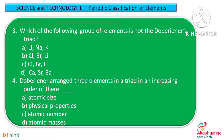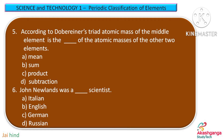Question 4. Dobereiner arranged three elements in a triad in an increasing order of their …. Option A: atomic size, Option B: physical properties, Option C: atomic number, and Option D: atomic masses.